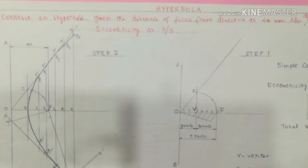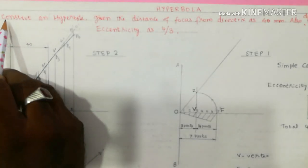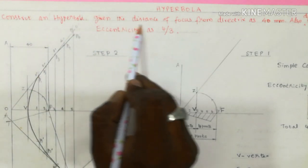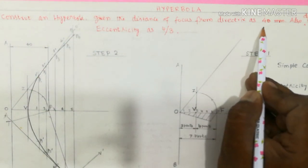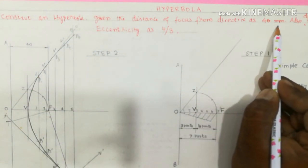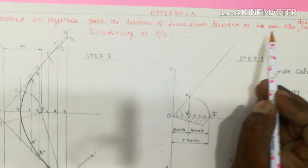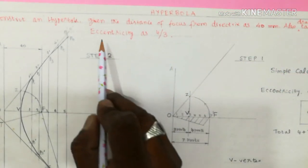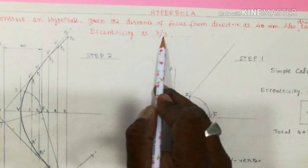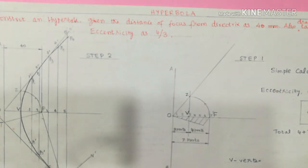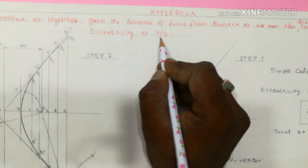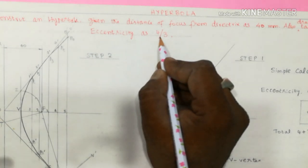Next: the hyperbola. The question asks to construct a hyperbola given the distance of focus from the directrix as 40mm, also draw tangent and normal. The eccentricity ratio is 4 by 3, which is greater than 1, confirming it is a hyperbola.